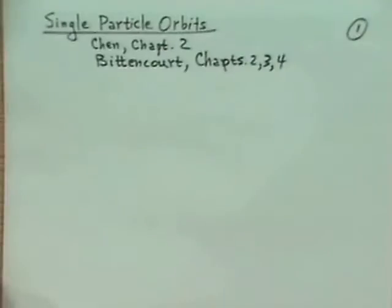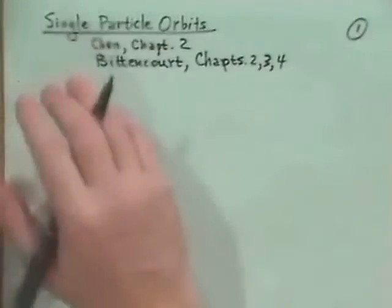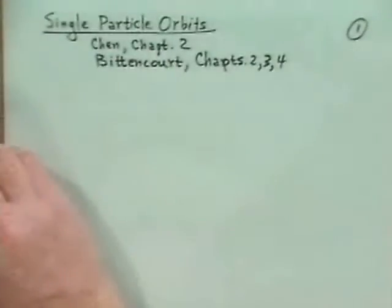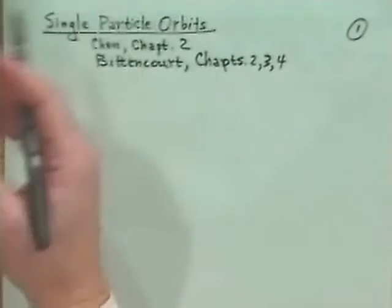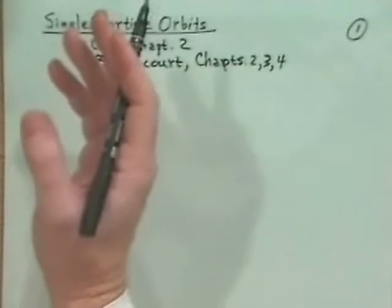We'll be talking about single particles. The reason why we talk about single particle orbits is because we want to be dealing with a plasma, which is going to be made up of a whole bunch of charged particles. And we're later going to have to deal with self-consistent or collective electric and magnetic fields.